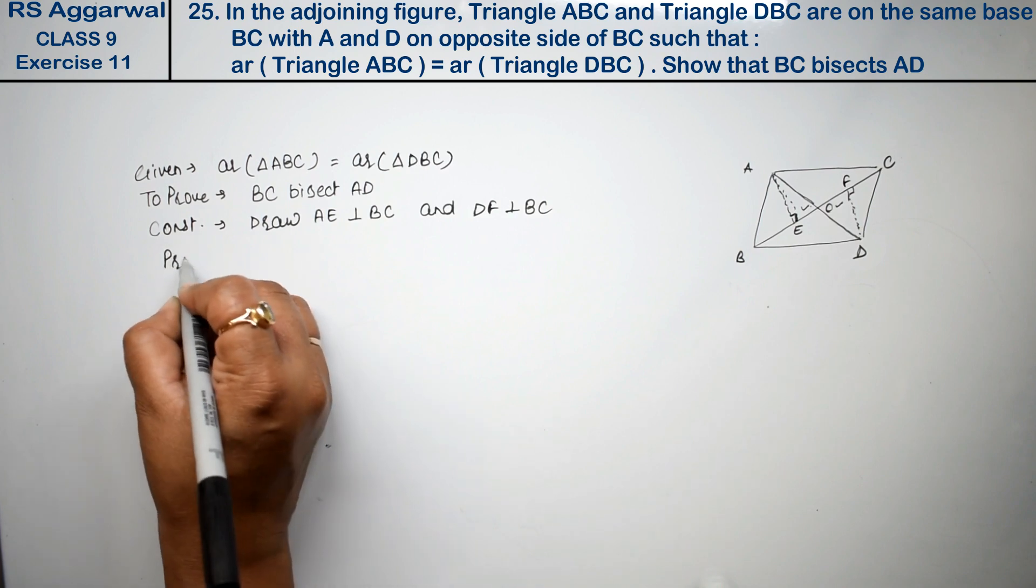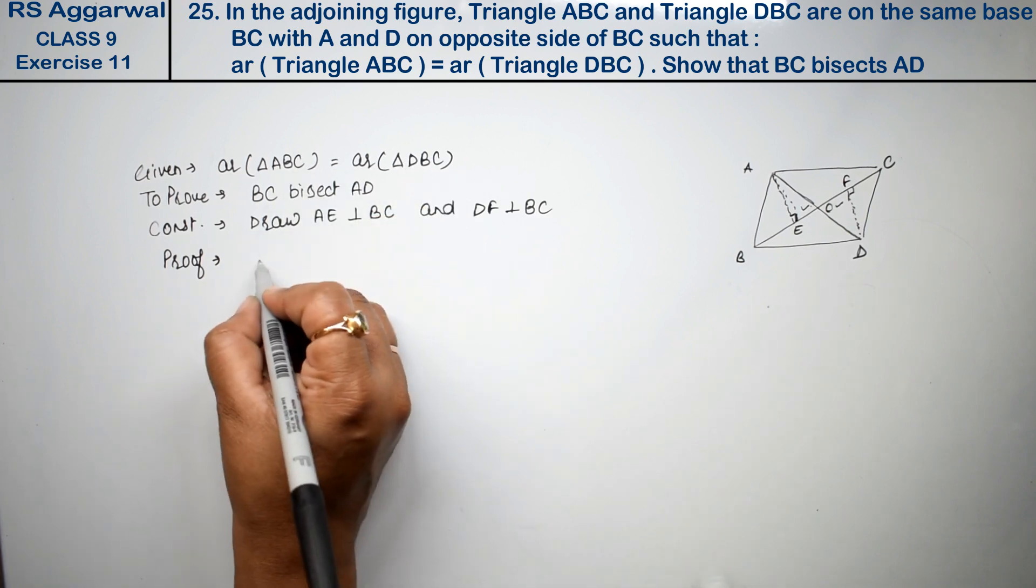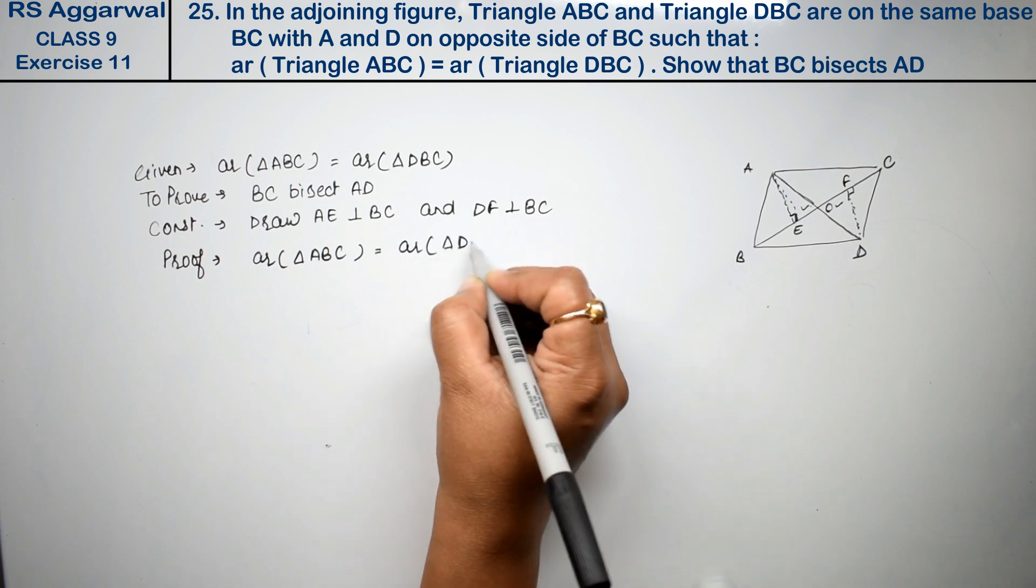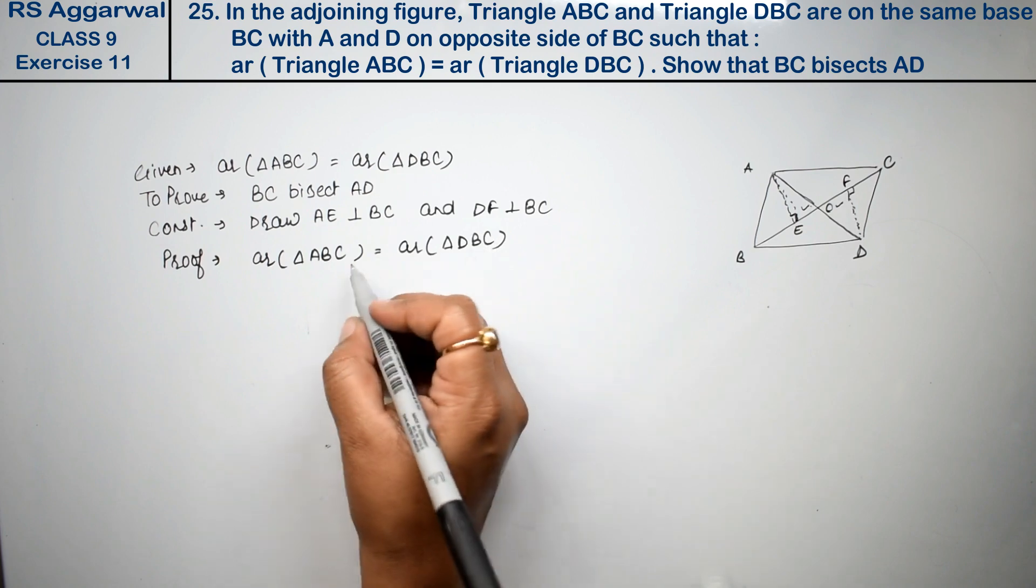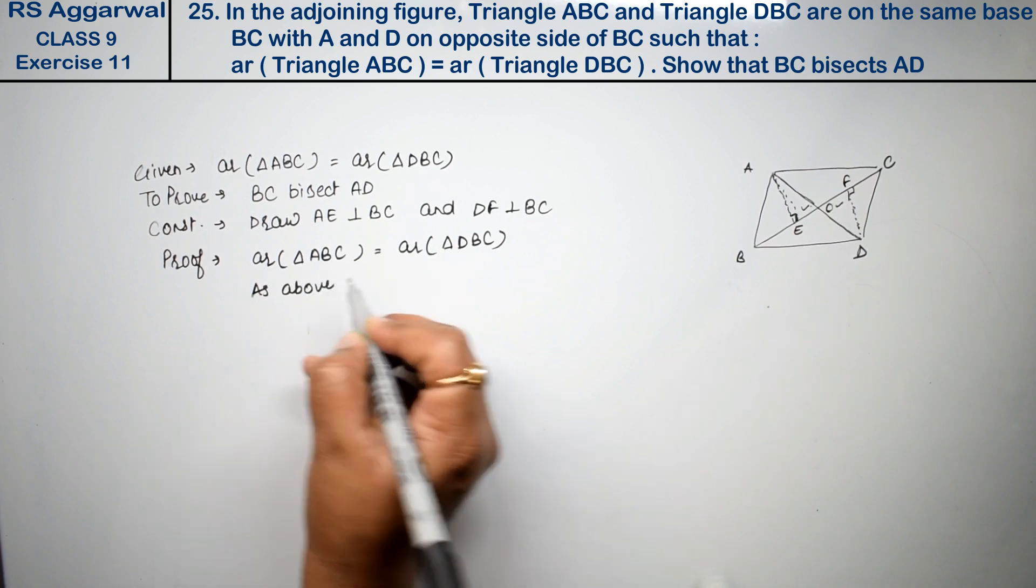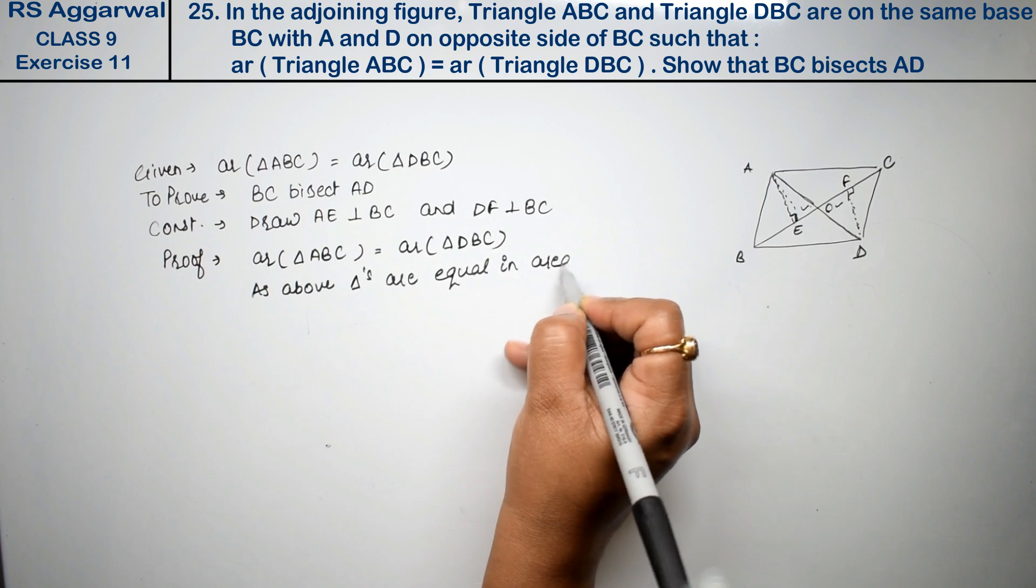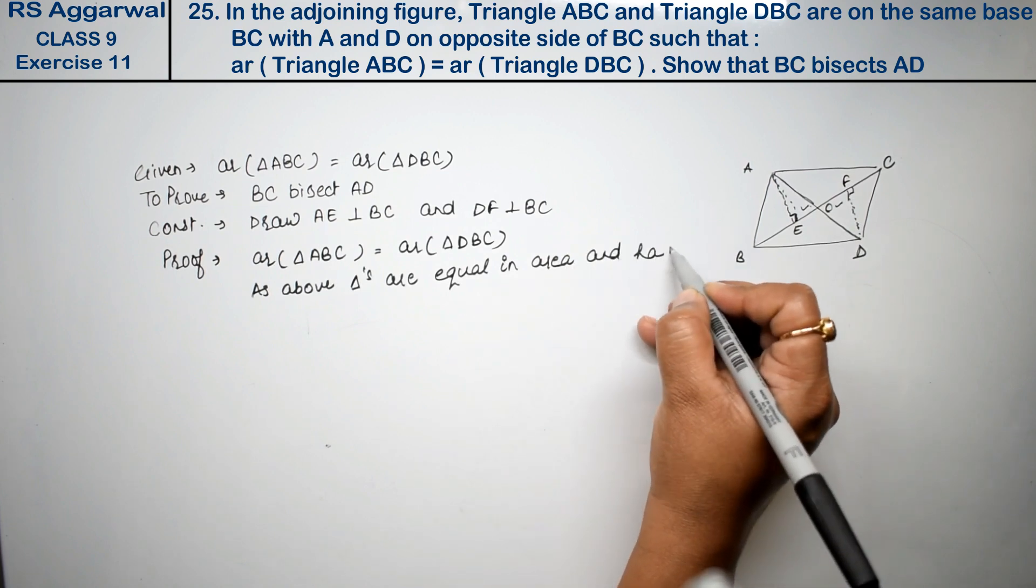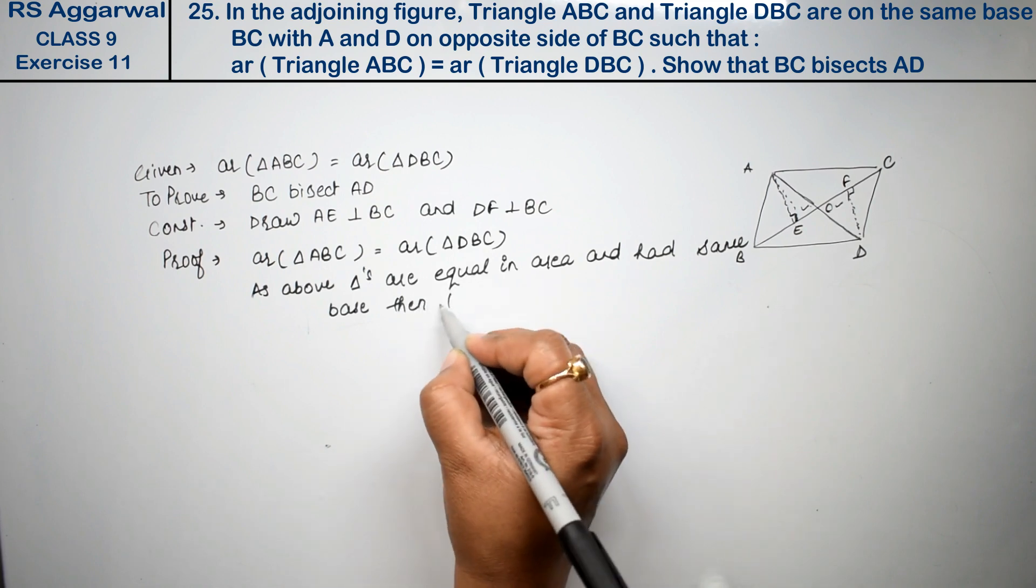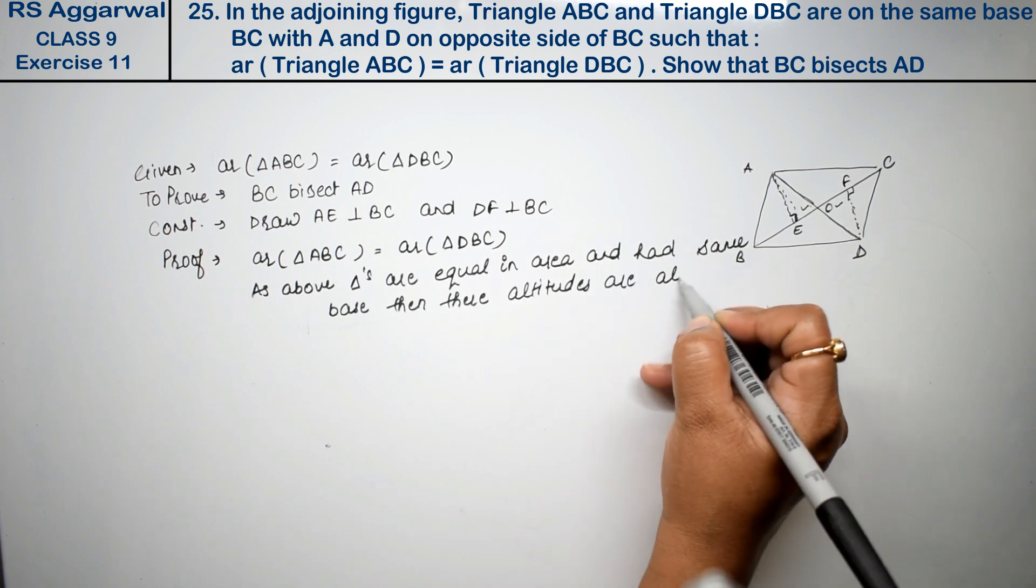Now let's prove. We have given area of triangle ABC is equal to area of triangle DBC, which are given, we start with that. These two are equal as above triangles are equal in area and had same base, then their altitudes are also same.